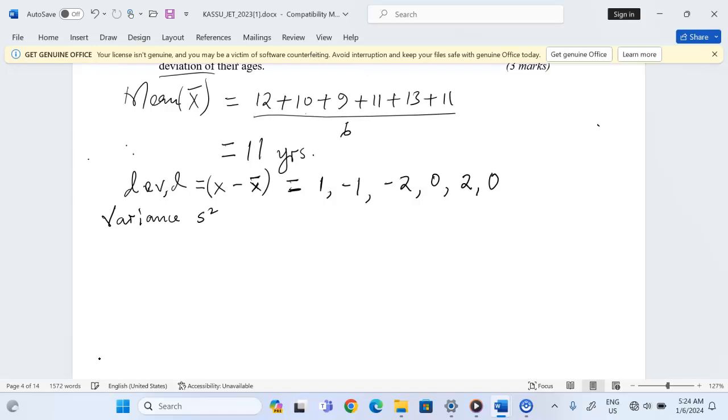Variance is abbreviated s squared, and we obtain it by getting the mean of all the deviations squared. So we divide by the total number. We're going to get 1 squared plus negative 1 squared...